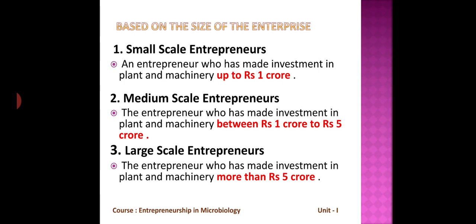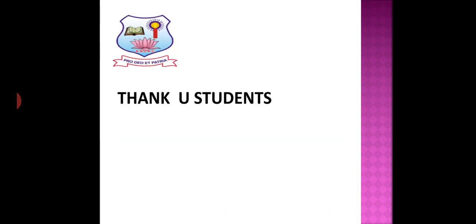Based on size of enterprise: a small scale entrepreneur has made investment in plant and machinery up to rupees 1 crore. A medium scale entrepreneur has invested above 1 crore but below 5 crore. A large scale entrepreneur has invested more than 5 crore in plant and machinery. Thank you students for listening.